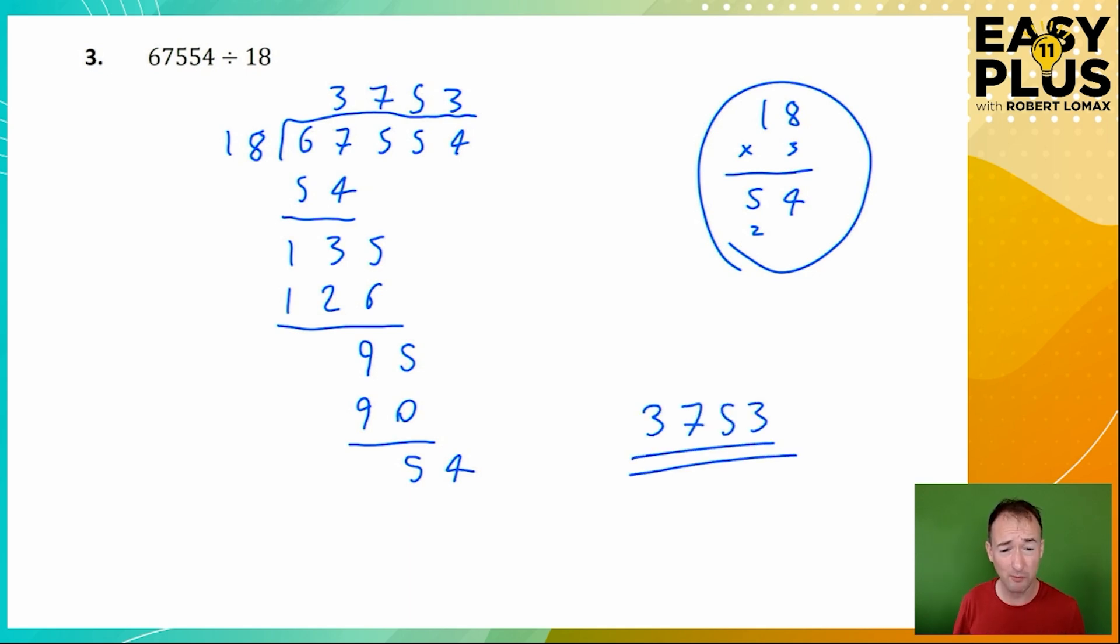And one thing you'll definitely be picking up from this lesson is that efficient and speedy long division involves having efficient and speedy mental arithmetic, and also being good at the kind of shortcuts that enable you to produce reasonably close estimates of how many times a number goes into another number without working everything out precisely at every stage.